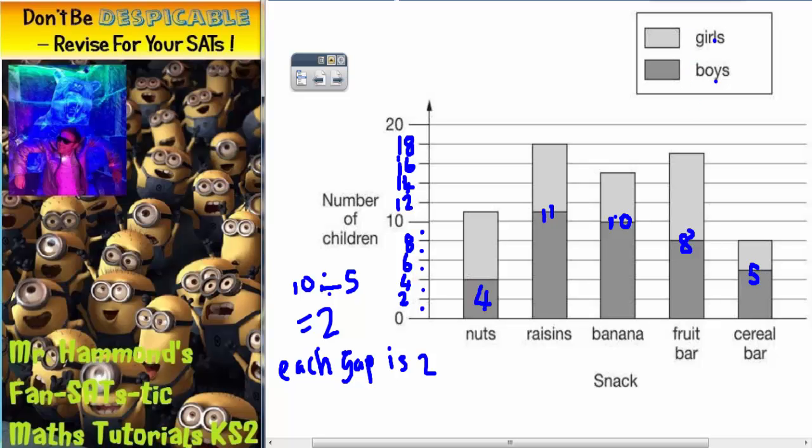Now let's do the girls. Girls, the light grey bar. I've got to remember that the first 4 is for the boys. So the girls bar doesn't go from 0 to 11, it goes from 4 to 11. So from 4 to 11 is 7. So the girls bar is actually 7 high for nuts.